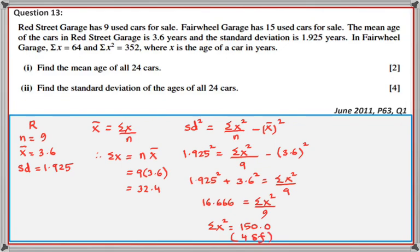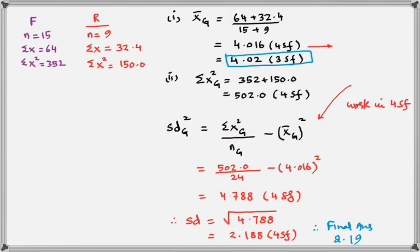Since the answer was not exact, it is written as 150.0 to four significant figures. Using this value, x̄ for the whole group = (64 + 32.4) / 24. Σx² for the whole group = 502.0. The unrounded mean of 4.016 is used in calculating standard deviation. The final answer for mean is 4.02 and for standard deviation is 2.19, both correct to three significant figures.